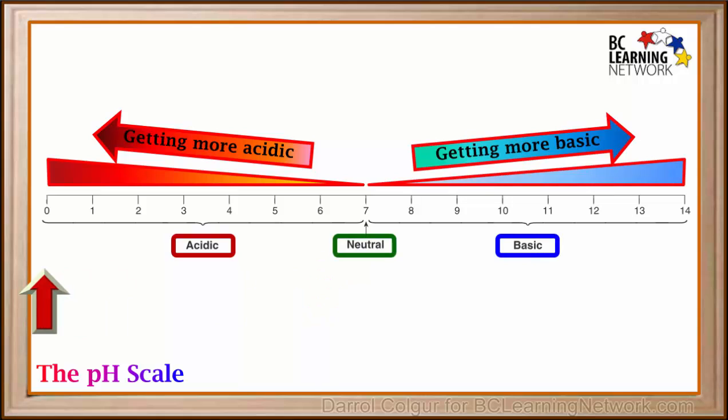So pH can range all the way from 0, which is very acidic, through 7, which is neutral, all the way to 14, which is very basic.